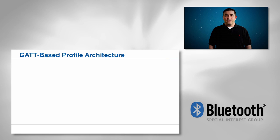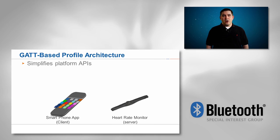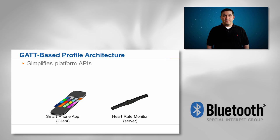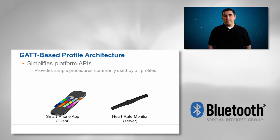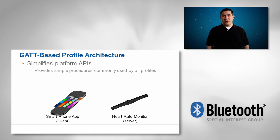The GATT profile defines a framework of basic procedures. OS platforms have been recently exposing GATT-level APIs for these basic procedures. This enables third-party application developers to write simple client applications that only need to interact with their data directly, instead of needing to implement a new protocol for each application.